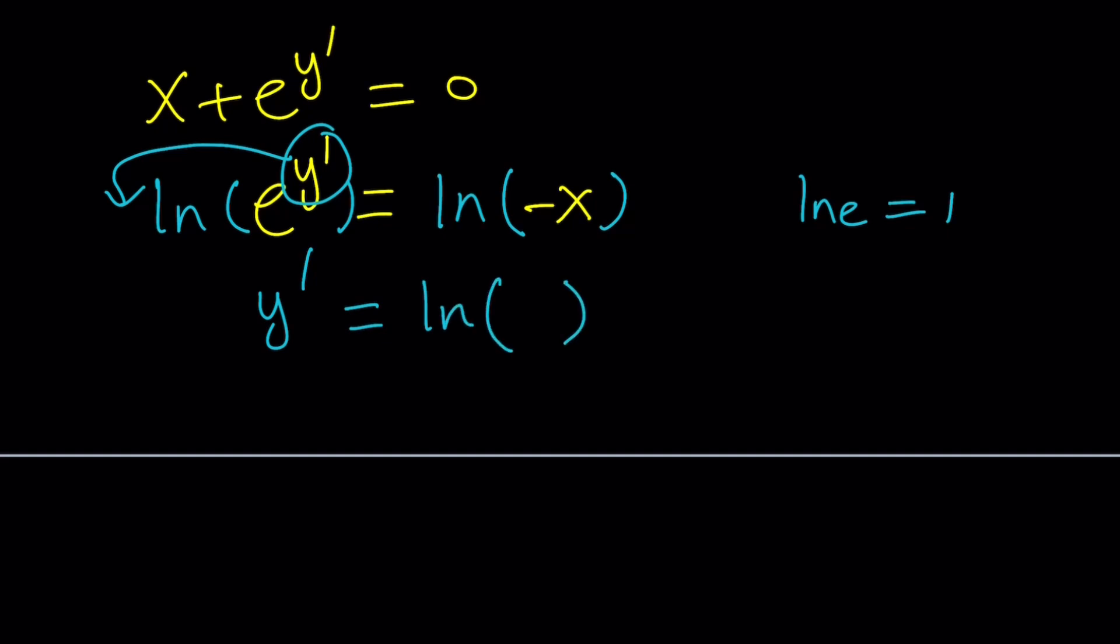And don't worry about the negative number inside the parentheses because you probably know if x is real, then it has to be greater than zero. But who said negative x cannot be greater than zero?